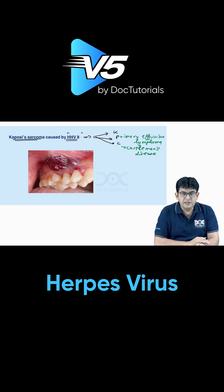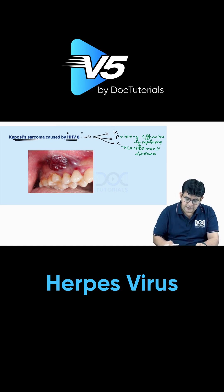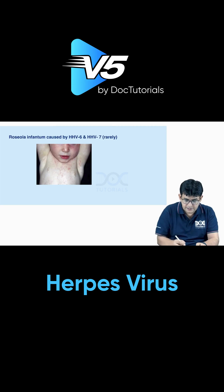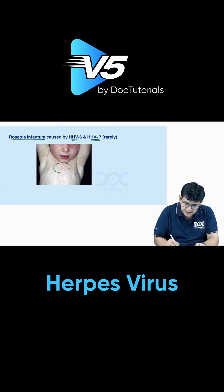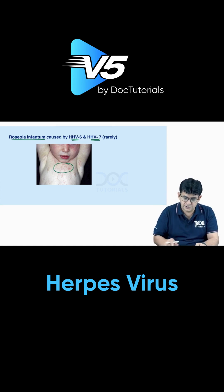Other important ones to know: roseola infantum, caused mainly by HHV6 and also HHV7. The lesions are termed as Nagayama spots.